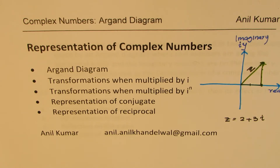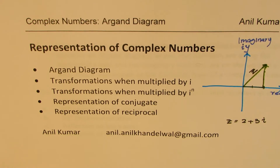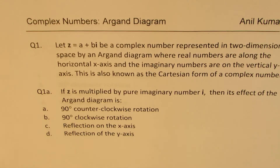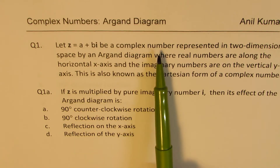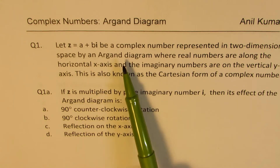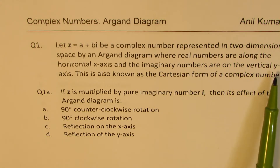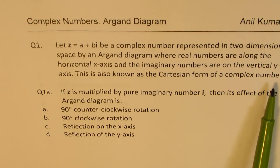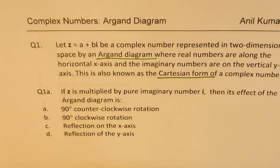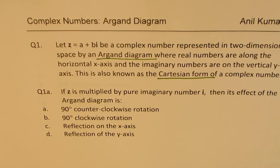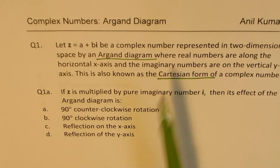We call it an Argand diagram. The vertical axis represents the imaginary part, the horizontal represents the real part. Now let's look into the equations related to this concept. Once again, let's understand: let z equals a plus bi be a complex number represented in two-dimensional space by an Argand diagram, where real numbers are along the horizontal x-axis and the imaginary numbers are along the vertical y-axis. This is also known as the Cartesian form of a complex number. At times we may call it an Argand diagram, or we may also say Cartesian form. Based on this, I have four questions for you — let us see how to answer these multiple choice questions.